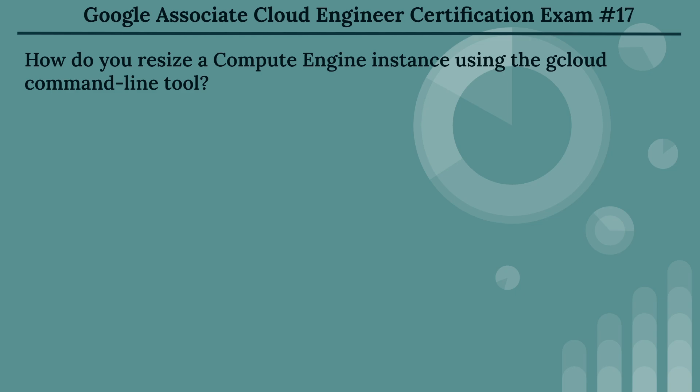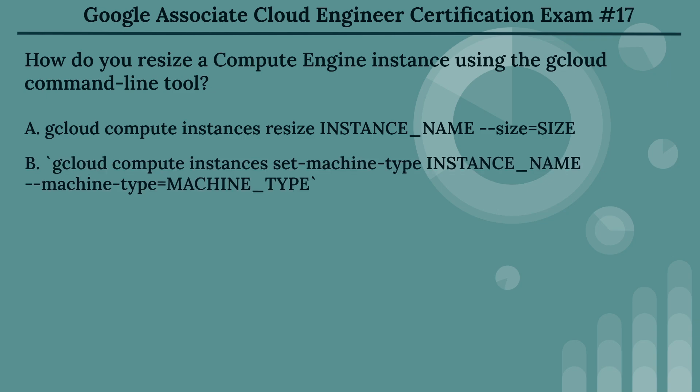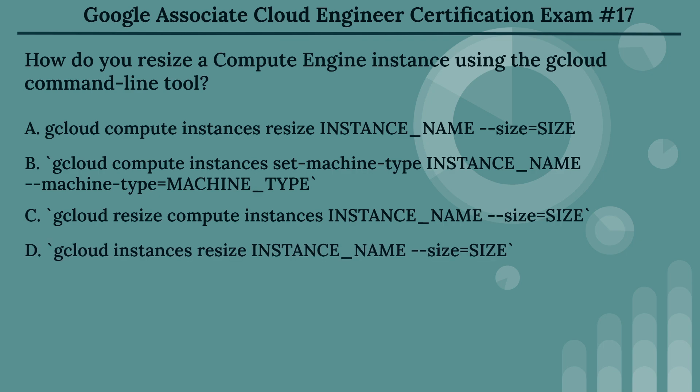The seventeenth question: how do you resize a Compute Engine instance using the cloud command line tool? The options are: Option A, gcloud compute instances resize INSTANCE_NAME --size=SIZE. Option B, gcloud compute instances set-machine-type INSTANCE_NAME --machine-type=MACHINE_TYPE. Option C, gcloud resize compute instances INSTANCE_NAME --size=SIZE. Option D, gcloud instances resize INSTANCE_NAME --size=SIZE.